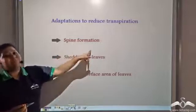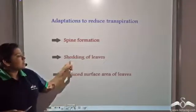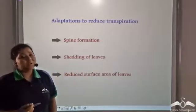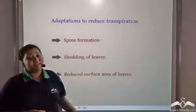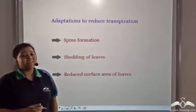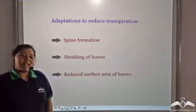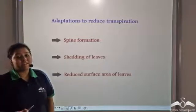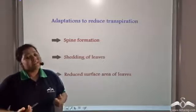So spine formation in xerophytic plants in the deserts, shedding of leaves in deciduous plants present in cold climates, as well as the reduced surface area of leaves in evergreen trees of the same cold climate — these are the various adaptations that plants use to reduce the rate of transpiration and to retain as much water as possible in their body.